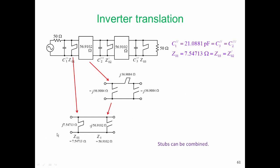An interesting thing is that these stubs are different. This stub has an inductive input impedance, and the second stub has a capacitive input impedance. One is a short-circuited stub, and one is an open-circuited stub, but we can still combine them.